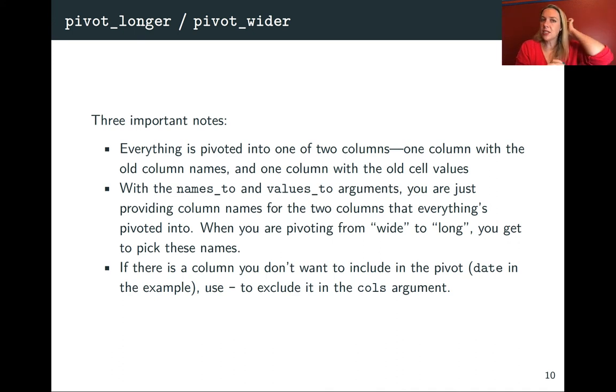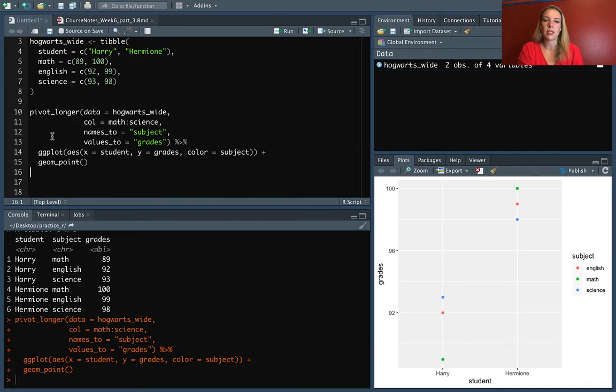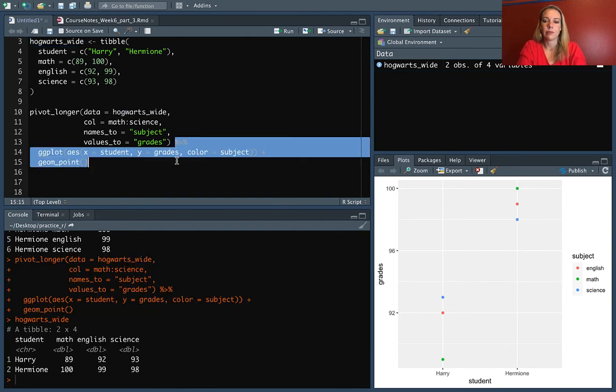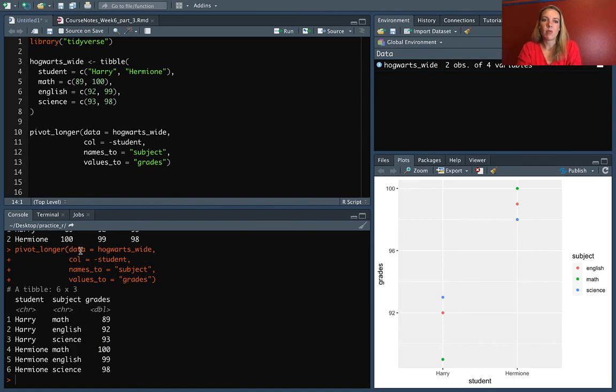One other thing to note, sometimes you want to grab everything but one column. So again, you can use the select rules, and you can use a negative to exclude what you don't want rather than listing everything you do want. So again, in the Hogwarts example, we want everything but student to pivot. So instead of saying math to science, we could just say minus student, and that works the same way.